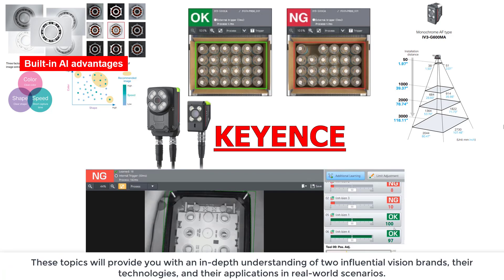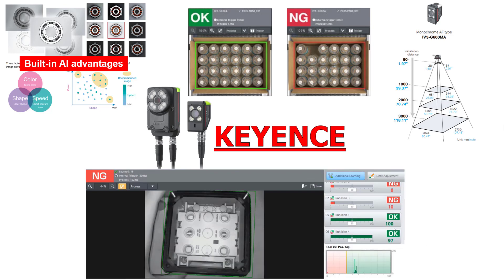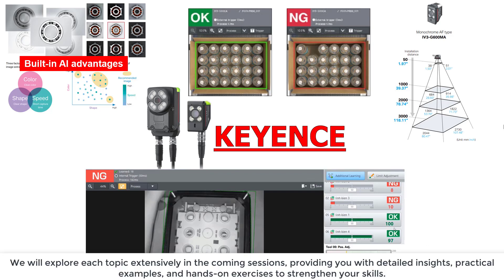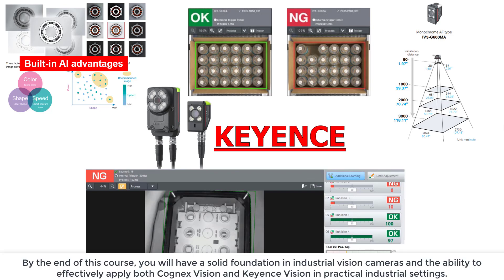This topic will provide you with an in-depth understanding of two influential vision brands, their technologies, and their real-world applications. We will explore each topic extensively in the coming sections, providing you with detailed insights, practical examples, and hands-on exercises to strengthen your skills. By the end of this course, you will have a solid foundation in industrial vision cameras and the ability to effectively apply both Cognex Vision and Keigan Vision in practical industrial settings.